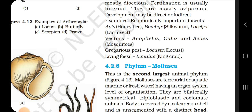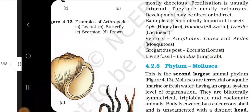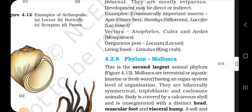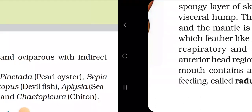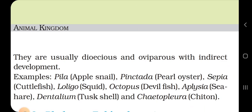4.2.8 Phylum Mollusca. This is the second largest phylum. Molluscs are terrestrial or aquatic (marine or freshwater) having organ system level of organization. They are bilaterally symmetrical, triploblastic and acoelomate animals. The body is covered by a calcareous shell and is unsegmented with a distinct head, muscular foot and visceral hump. A soft and spongy layer of skin forms a mantle over the visceral hump. The space between the hump and the mantle is called the mantle cavity, in which feather-like gills are present. They have respiratory and excretory functions. The anterior head region has sensory tentacles. The mouth contains a file-like rasping organ for feeding called the radula. They are usually dioecious and oviparous with indirect development.